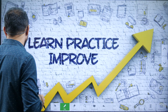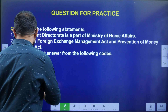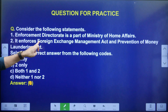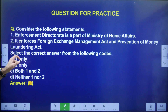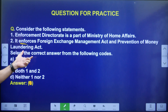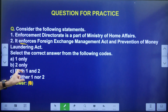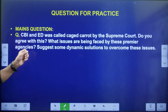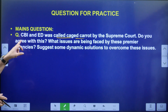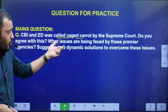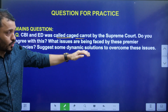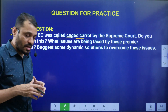Today's question: Consider the following statements — first, ED is a part of the Ministry of Home Affairs; second, it enforces FEMA and PMLA. Tell me which one is correct. The MACE question: CBI and ED were called 'caged parrots' by the Supreme Court — do you agree? What are the issues being faced by these premier agencies, and suggest some dynamic solutions to overcome these issues.